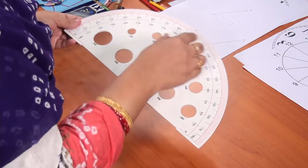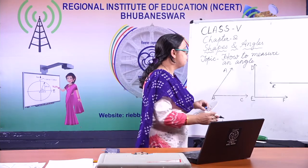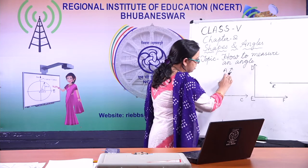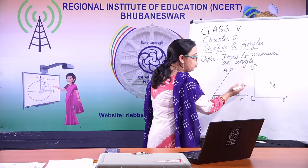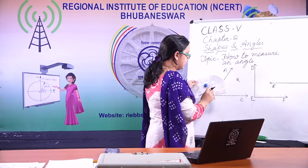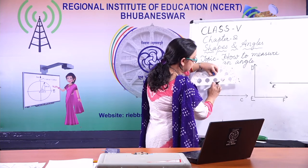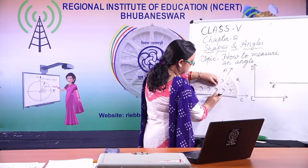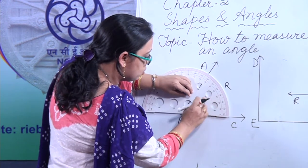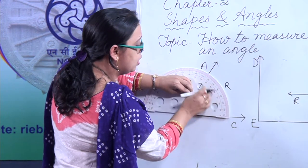Let us measure some angles I have already drawn on the board. This angle ABC has two arms and the angle opening is to the right-hand side. To measure this angle, we will use the inner scale. The angle opening is to the right, so we use the inner scale. If the angle opening is to the left-hand side, we use the outer scale.